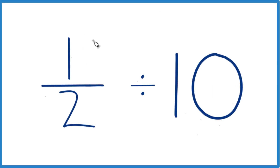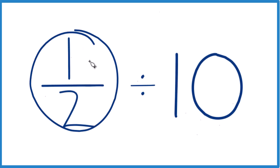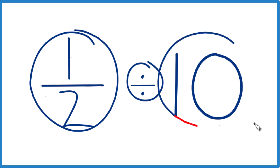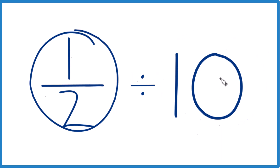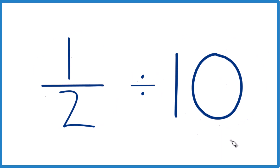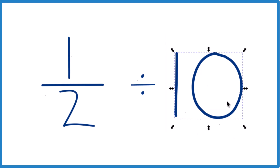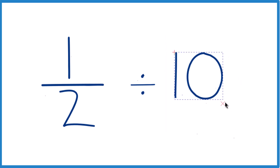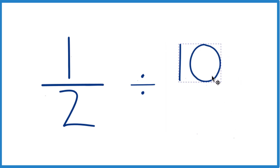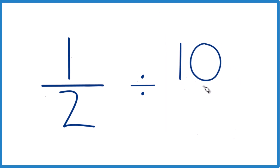All right, let's take 1 half divided by 10. Here's how you do it. So it's helpful if we take this 10 here, and instead of 10, let's call it 10 over 1. Because 10 divided by 1 is still 10, but now everything lines up real nice.